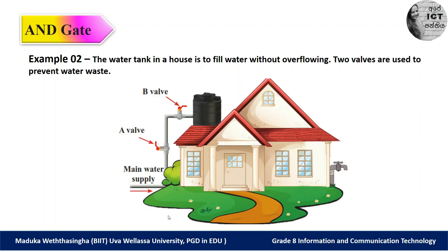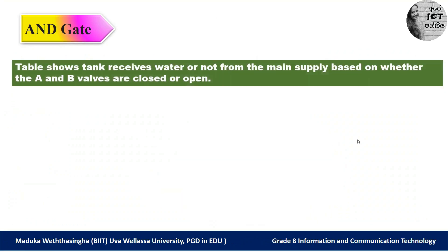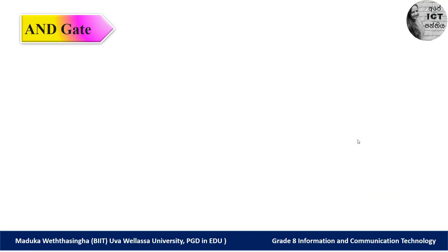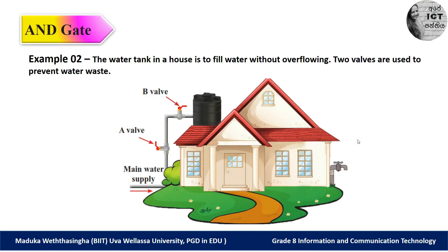Let's discuss a second example for the AND gate. A water tank in a house is to be filled without overflowing; two valves are used to prevent water waste. On screen you can see a house with a main water supply connected to a tank. Between the main water supply and the tank there are two valves A and B. Based on whether the valves are open or closed, water enters the tank, giving us four possible situations.